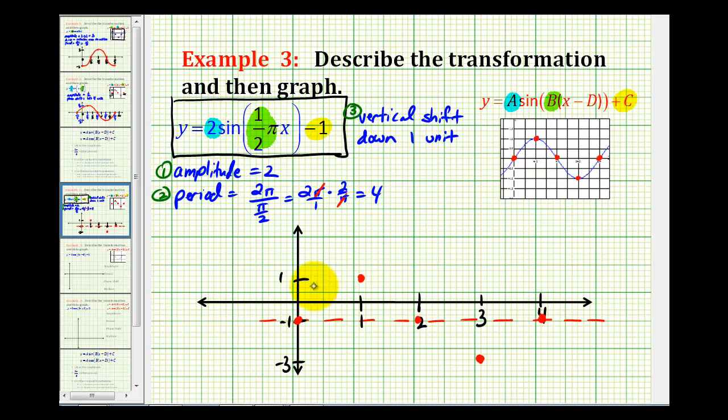And now we have the five key points to make a nice graph of the given function. It would look something like this. And again, if you need to review how A, B, C, and D affect the graph of the sine function, I'll leave you with those notes.